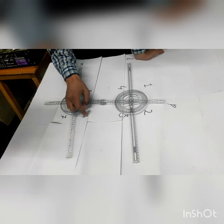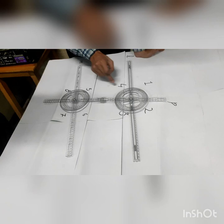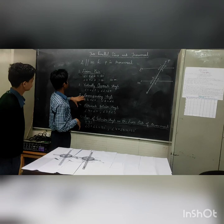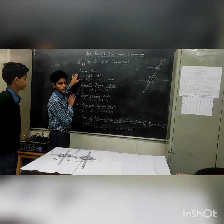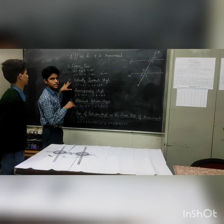The same side of the transversal line will sum to 180 degrees. This concludes our discussion of parallel lines and transversal lines.